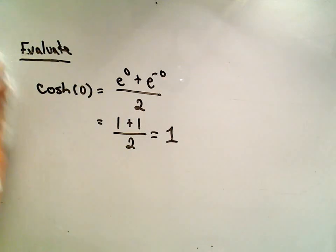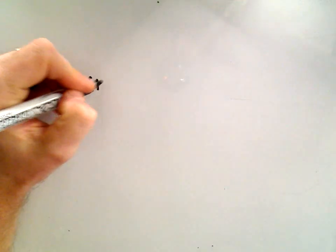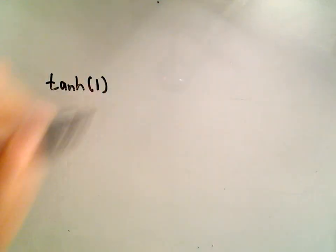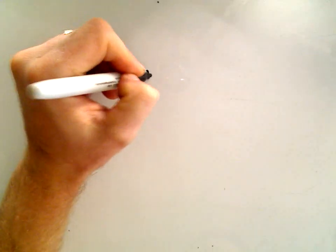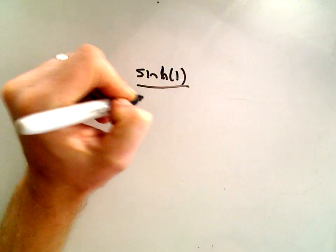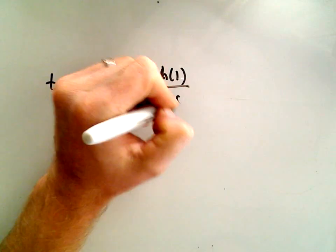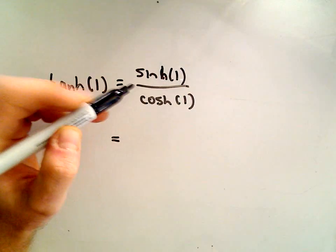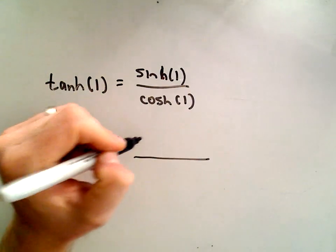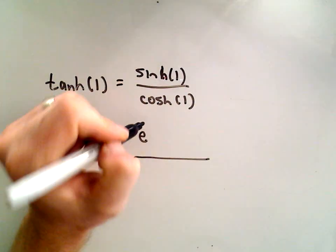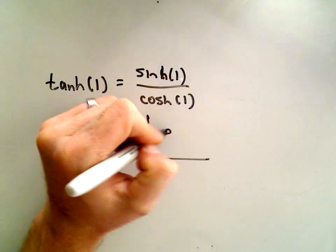You know, if they wanted you to evaluate one of the other ones, I guess we can do one real quick. Suppose they ask you to find hyperbolic tangent of 1. Well, we know that's going to be hyperbolic sine of 1 over hyperbolic cosine of 1. And now we just have to use our definitions. So we'll get e to the 1st minus e to the negative 1st, all of this divided by 2.